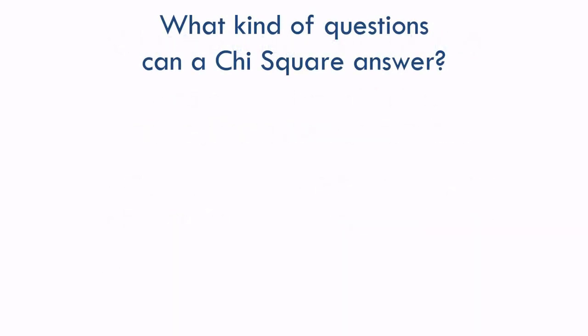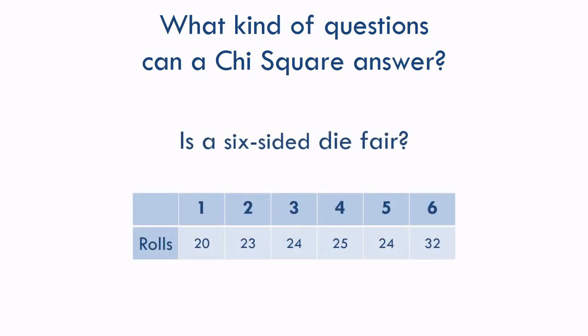So what kind of questions can a chi-square answer? Let's look at some examples. Let's say you're playing a game and you suspect your friend is using loaded dice to cheat. You could tell if your friend's six-sided die is fair by rolling it lots of times, counting the results, and putting them in a table like this. Here we have one variable, which is the die roll, with six levels, which are the six possible outcomes. We call this a one-way chi-square because there's only one variable.